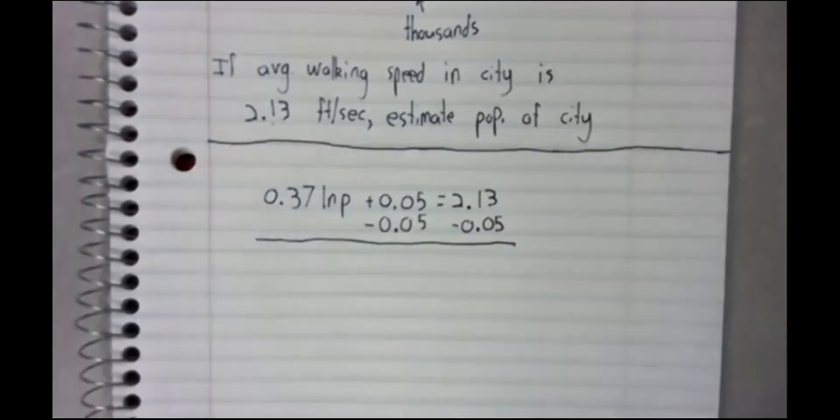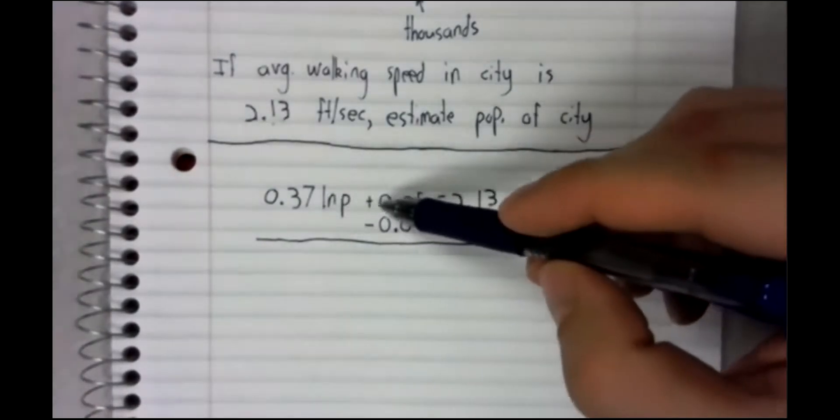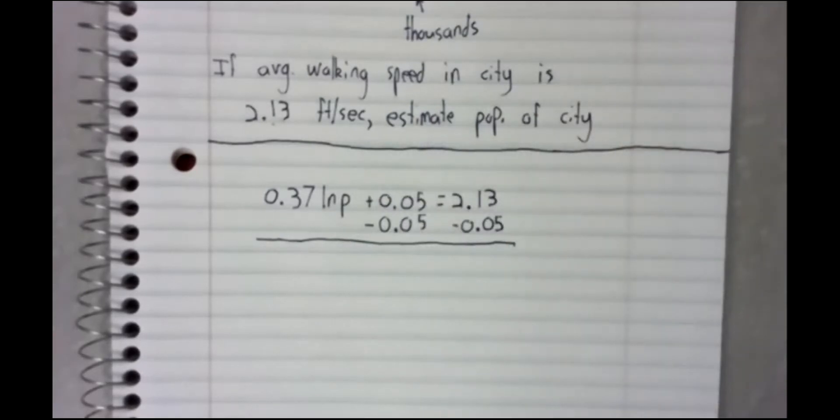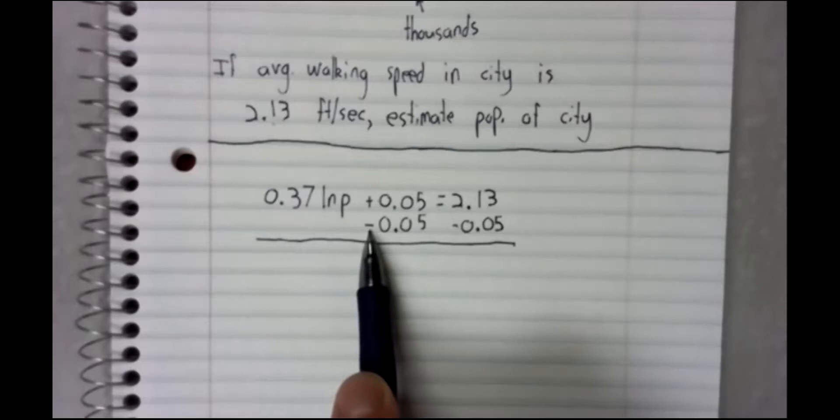And we undo the order of operations. So addition, which is happening last here, is the first thing we get rid of. And of course addition is gotten rid of via subtraction.